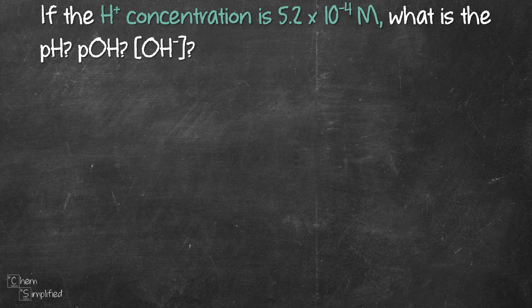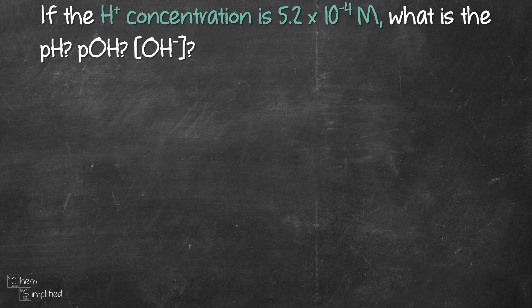The question gives the concentration of hydrogen ion as 5.2 times 10 to the negative 4 molar and it wants us to find three things: pH, pOH, and the concentration of OH-.